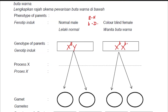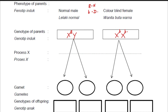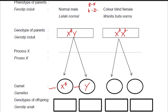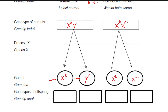For the schematic diagram, we first complete the process of forming gametes through meiosis. When gametes are formed, each only carries half of the genetic content of the parents. So one sperm will carry X^B and one sperm will carry Y. For the ovum, they only carry half the genes, so both ova carry X^b.